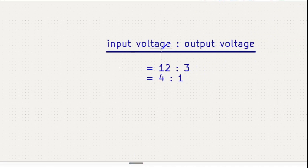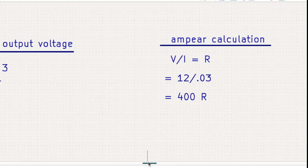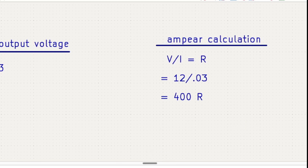Input voltage is to output voltage. What is our input voltage? That is 12V. And our target output voltage is 3V. That means 4 is to 1 is our ratio. When we use the total resistance, that means 400 ohms, we have to divide 400 ohms by 4. 400 divided by 4 equals 100 ohms.